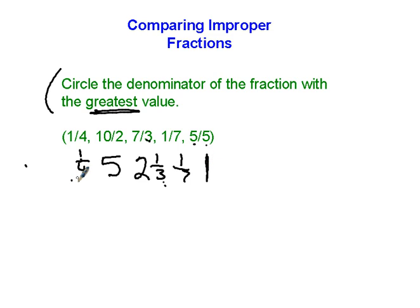So now I'm going to compare a fourth, 5, 2 and 1 third, 1 seventh, and 1. Which is the greatest out of all these? Well, that would be 5. 5 is bigger than 1, which is bigger than 1 seventh or 1 fourth. And 5 is bigger than 2 and 1 third. So 5 is the largest, and you'd circle the denominator up here in the actual problem. Don't circle the denominator down here or circle the 5 or something like that.